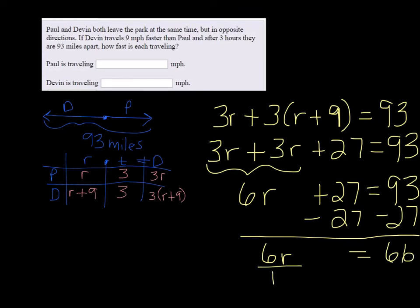Finally, dividing both sides by 6, we get the rate is 11. If we go back to our chart, R was what we said Paul's rate was. So if we go to put our answer in, we're going to put 11 in for Paul. But Devin was going 9 miles per hour faster than that, so we're going to put 20 in for Devin.